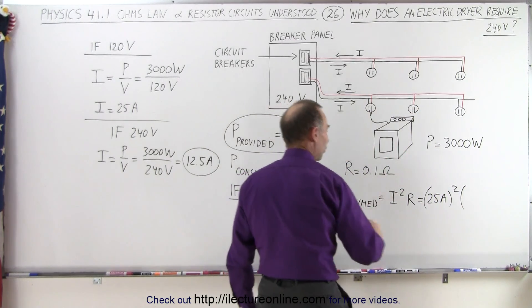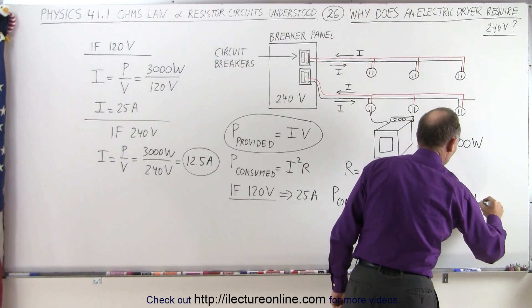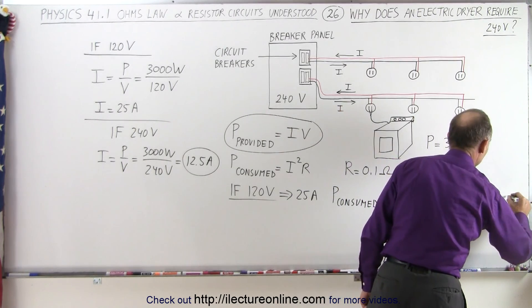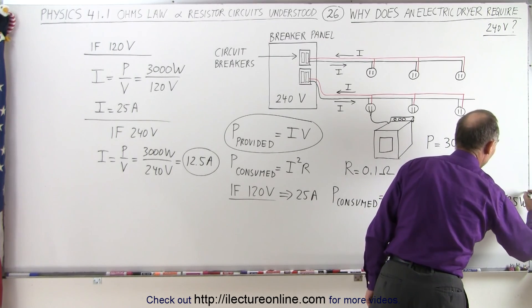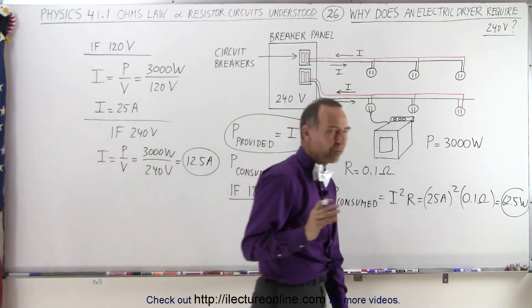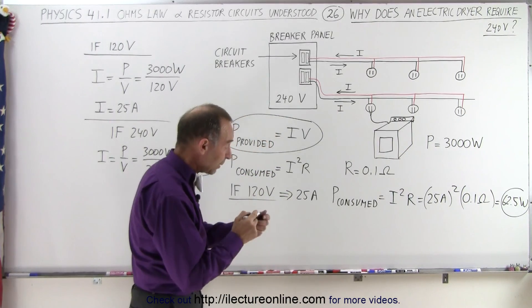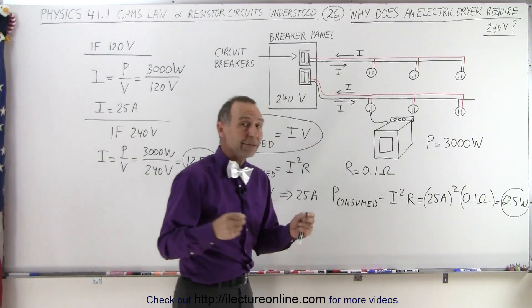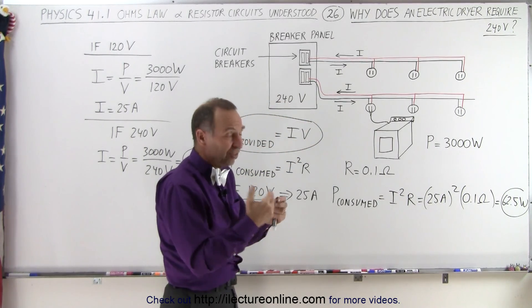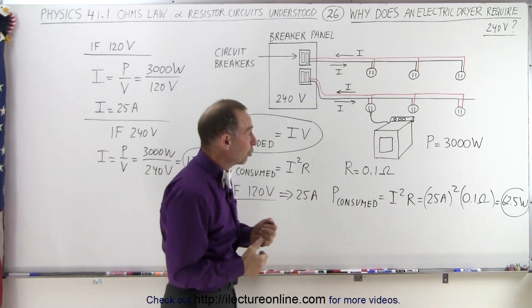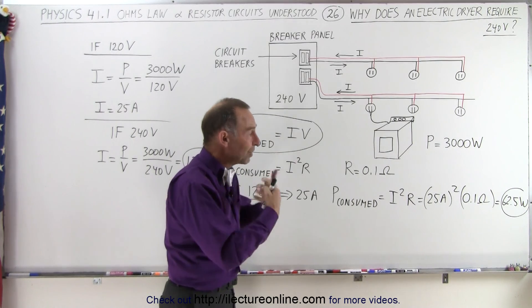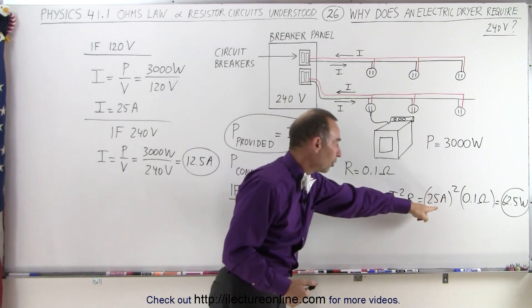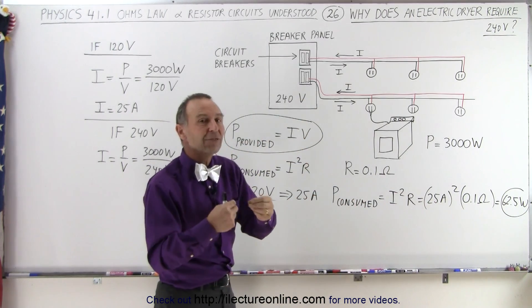That would be 625 times 0.1, which would be equal to 62.5 watts. 62.5 watts is quite a bit of power dissipated by the wire, which would mean that the wires would get quite hot. And that might even get so hot - and since the wires run to the two-by-fours, the wood of the house and all that - there could be so much heat being generated by the wires having to carry such a large current that you might even start a fire.